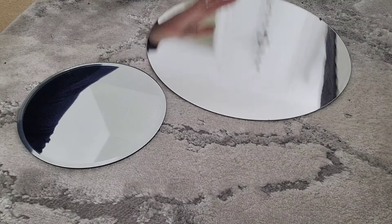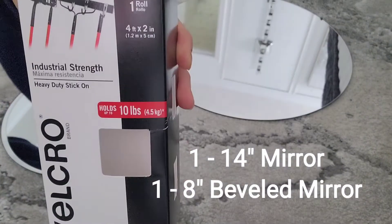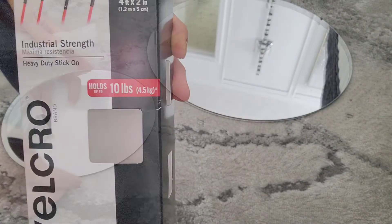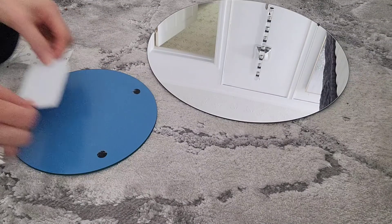Of course we're going to take it a step further. I have a 14-inch round mirror and an 8-inch beveled mirror. I'm using this heavy duty Velcro on the back of the small mirror to adhere it to the larger mirror.